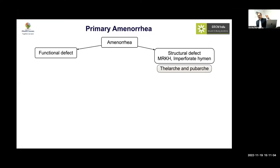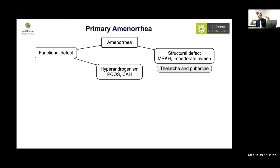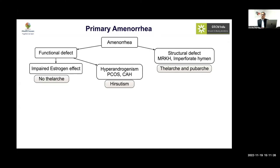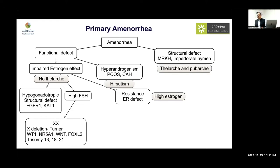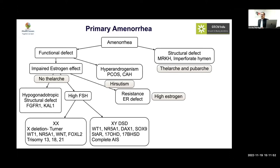Structural defects show normal breast and pubic hair development. Functional defects — too little estrogen or too much androgen — can cause primary amenorrhea. Androgen excess, as in PCOS or CAH, causes hirsutism. Impaired estrogen effect leads to absent thelarche; this can be due to estrogen receptor defect (estrogen levels relatively high) or hypogonadotropic hypogonadism (central cause) or hypergonadotropic hypogonadism (high FSH) from XX or XY DSD.